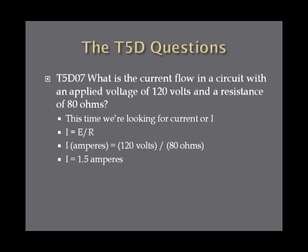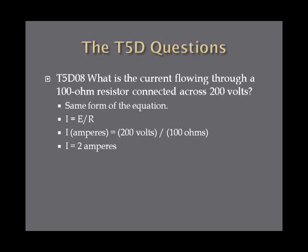What is the current flow in a circuit with an applied voltage of 120 volts and a resistance of 80 ohms? This time we're looking for current, so I equals E over R. I in amperes equals 120 volts divided by 80 ohms, so I equals 1.5 amperes. Next: What is the current flowing through a 100 ohm resistor connected across 200 volts? Current equals voltage over resistance, so I equals 200 volts divided by 100 ohms, giving I equals 2 amperes.